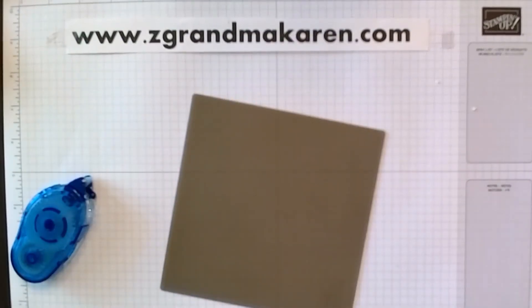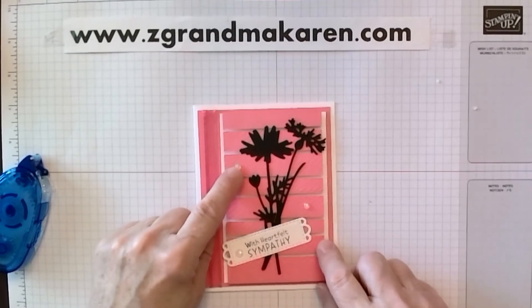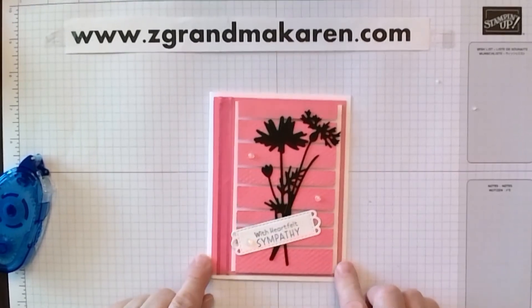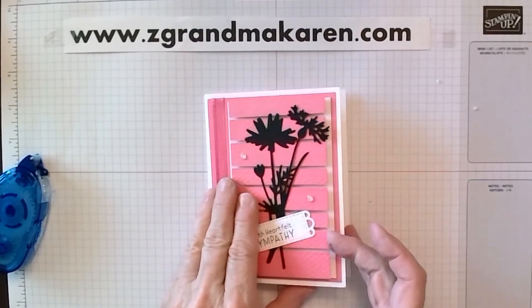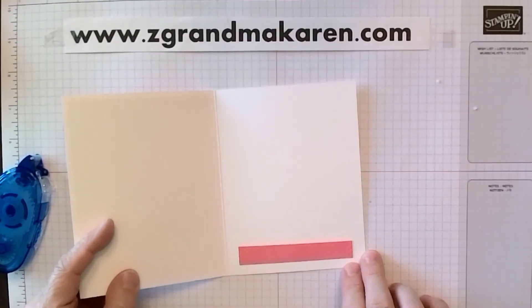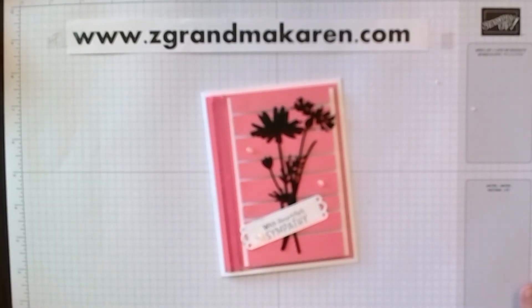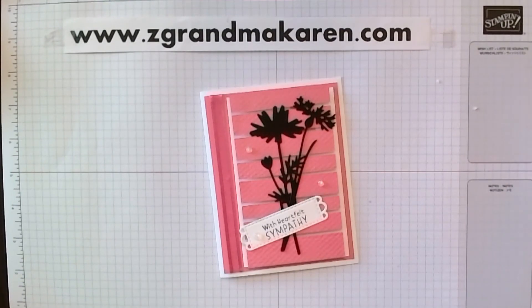Then I also decorated it with a couple of opal gems. And I did sympathy. And you may have an extra strip left over and that you can put on the inside. So I hope you enjoyed this technique. And you can try making one. Thanks for watching. And have a great day.